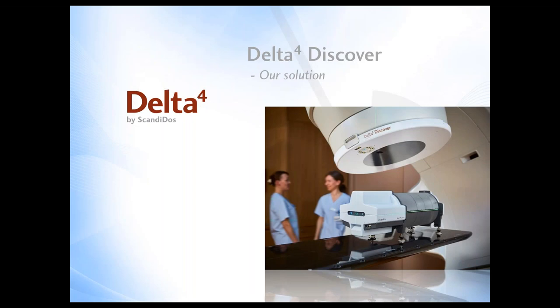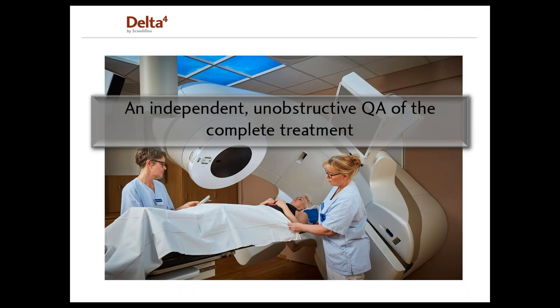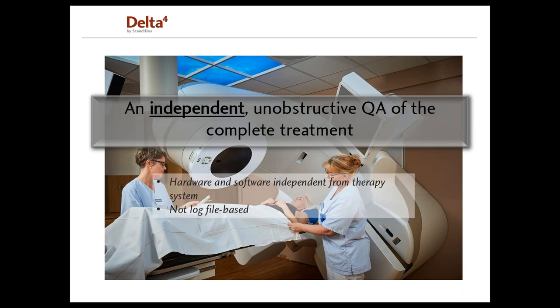Now I also want to speak about the Delta IV Discover, which is our transmission detector. What do you get with the Delta IV Discover? You get an independent, unobstructive quality assurance of the complete treatment. I want you to focus on the word independent. The Delta IV Discover is completely independent from the accelerator. The hardware and software are separate from the hardware and software of the linear accelerator, and it is not based on any log files from the LINAC system.